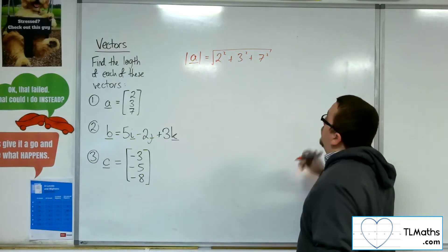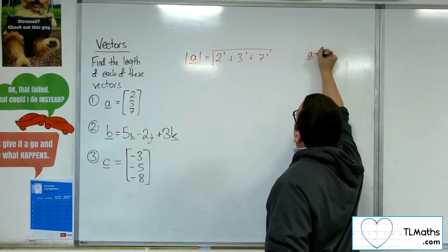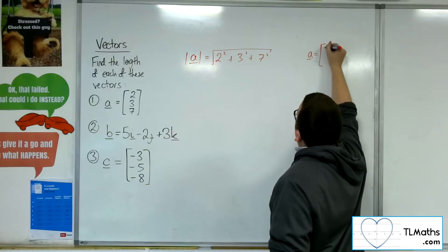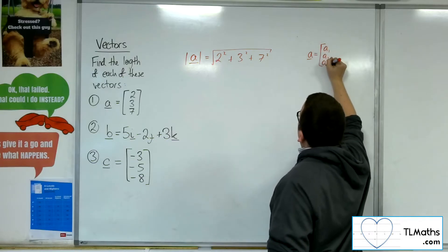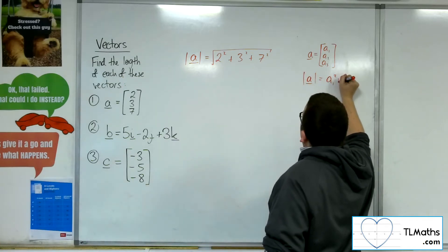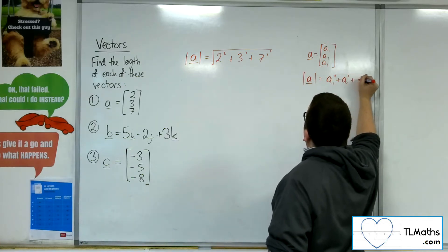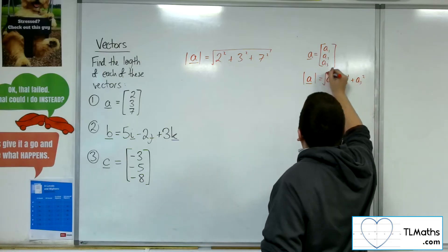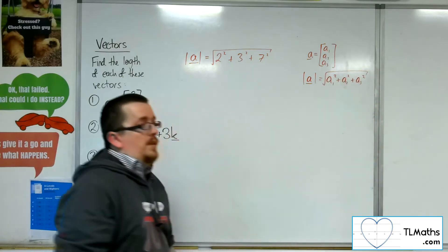So, the length of a vector that's given by A1, A2, A3, its length is A1 squared plus A2 squared plus A3 squared square rooted, as we saw in the previous video.